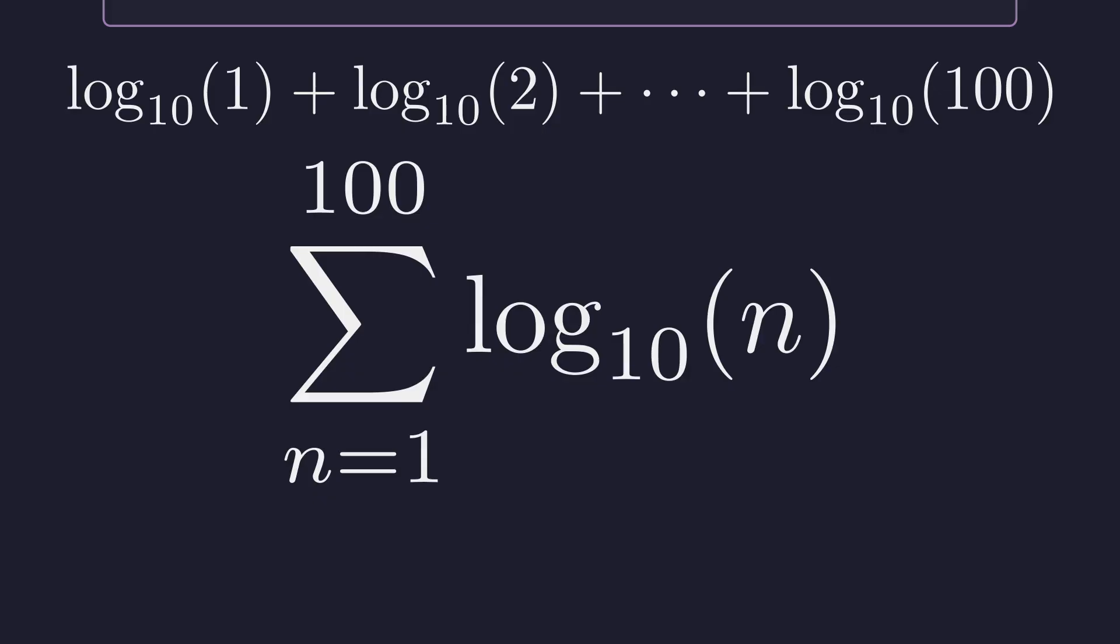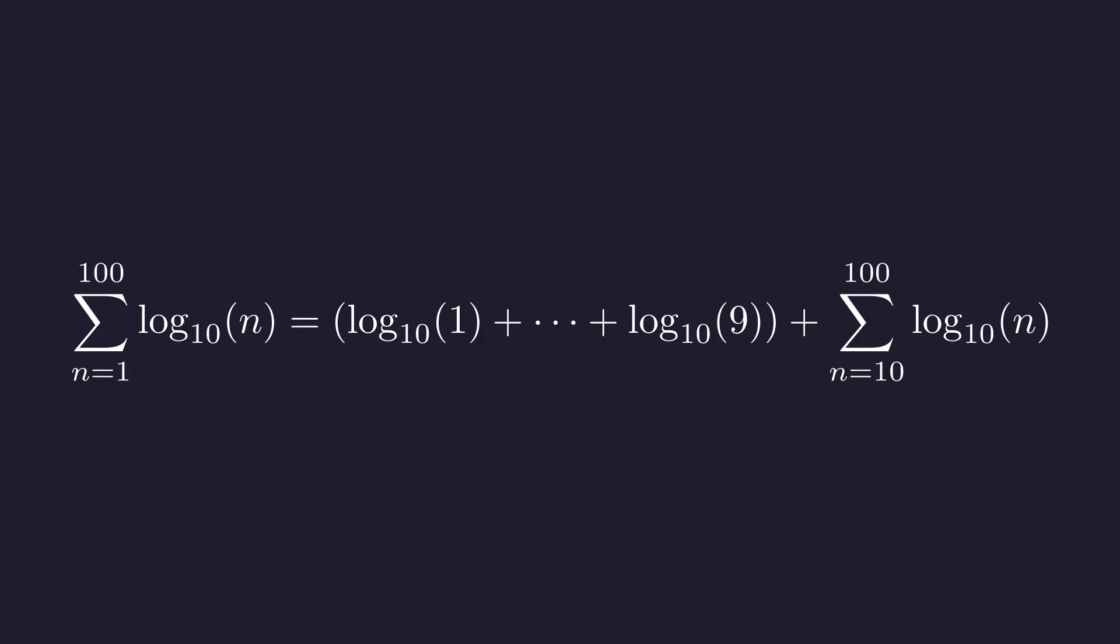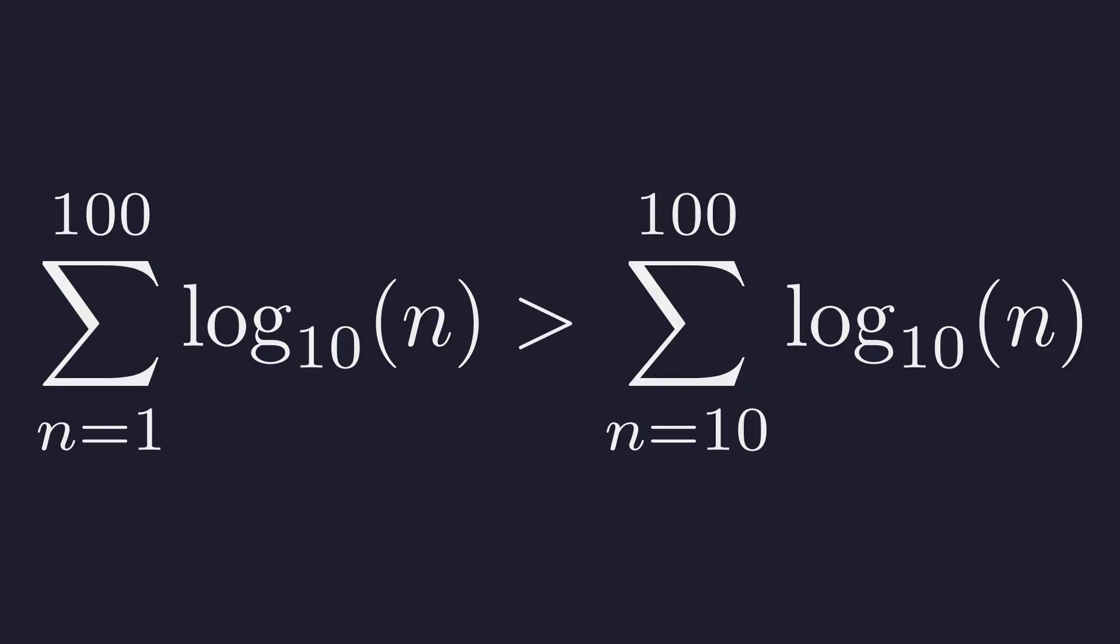The question is, is this sum bigger than 100? We could calculate it term by term, but there's a much more elegant way. Here's the thing: we don't need to know the exact value. We just need to show it's bigger than 100. Let's split this sum into two pieces. Most of the action happens in the terms from 10 to 100. The log of 1 is 0, and logs of 2 through 9 are all positive numbers. If we just ignore these positive terms, we're making our sum smaller. So the original sum is definitely bigger than just the sum from n equals 10 to 100. If we can prove this smaller sum beats 100, we're done.